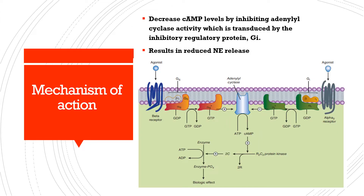Alpha-2 receptors are G-protein coupled receptors. When these receptors are activated, the Gi subunit of the G-protein inhibits adenylyl cyclase, decreasing cyclic adenosine monophosphate (cAMP) levels. This reduces further norepinephrine release during sympathetic activation.